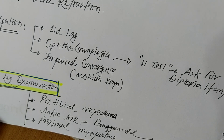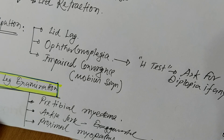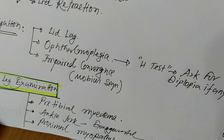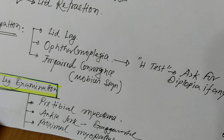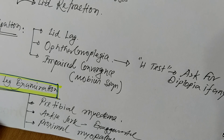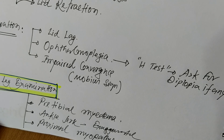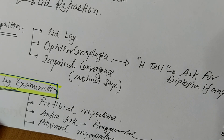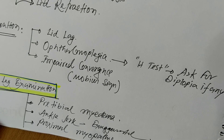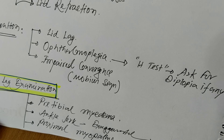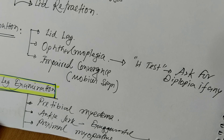The question is how to differentiate exaggerated deep tendon reflexes in a thyrotoxic patient from those in a patient with upper motor neuron lesion. In both cases, deep tendon reflexes are exaggerated. However, in a patient with upper motor neuron lesion, the plantar response is also abnormal (extensor). But in a thyrotoxic patient, the plantar response remains normal — that is, plantar flexor bilaterally. This is the key differentiating point.